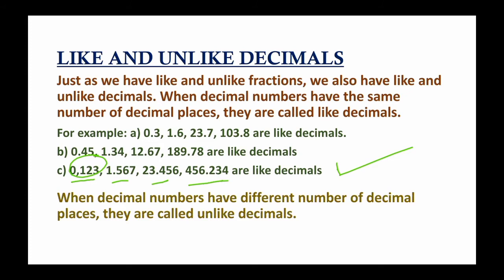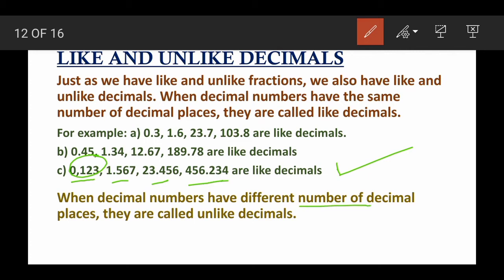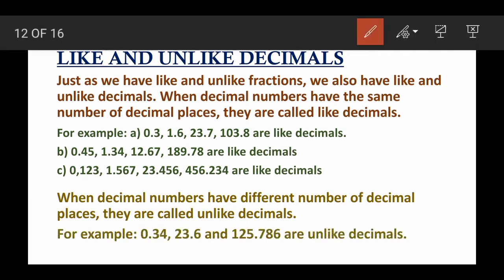Now let's move to unlike decimals. When decimal numbers have different numbers of decimal places, they are called unlike decimals. For example: 0.34, 23.6, and 125.786. The first number has two digits after the decimal point (hundredths), the second has one digit (tenths), and the third has three digits (thousandths). Since all three contain different numbers of decimal places, they are unlike decimals.